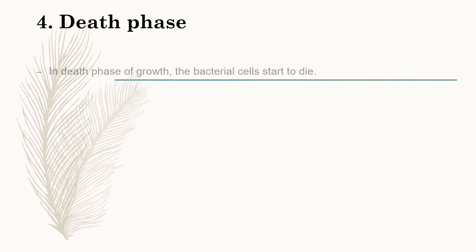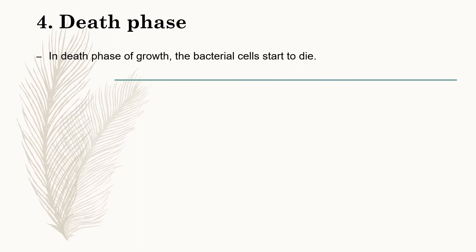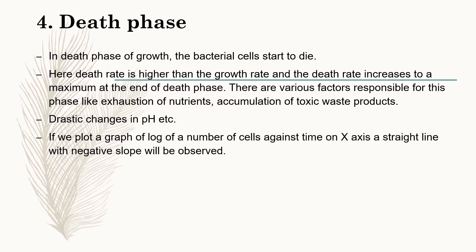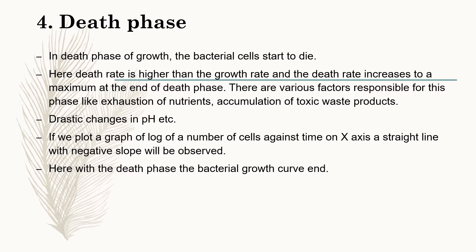The fourth phase is the death phase. In the death phase, the bacterial cell starts to die. The death rate is higher than the growth rate, and the death rate increases to a maximum at the end of the death phase. The rate of death of bacterial cells increases due to various factors like exhaustion of nutrients, accumulation of toxic waste products, and drastic changes in pH. If we plot a graph of log of number of cells against time on the x-axis, a straight line with a negative slope is observed. With the death phase, the bacterial growth curve ends. These are the growth phases of a bacterial cell.